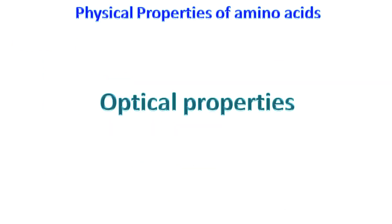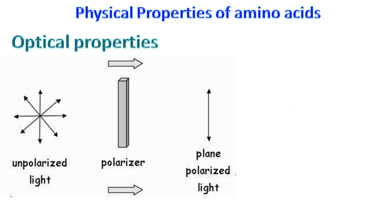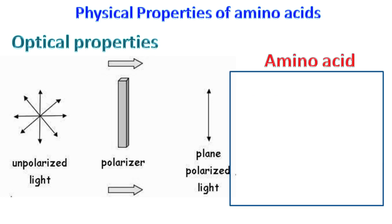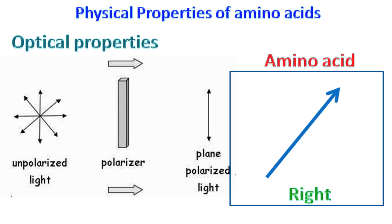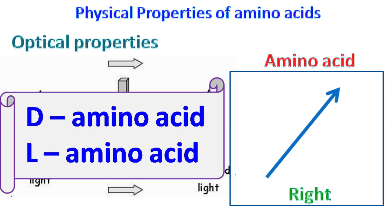Optical properties: when an unpolarized light is passed through a polarizer, it gets plane polarized. The amino acid can rotate the plane polarized light in a left or right direction. On the basis of this, they are classified as D amino acid or L amino acid.